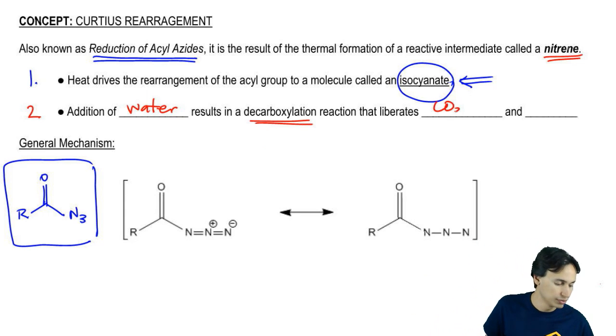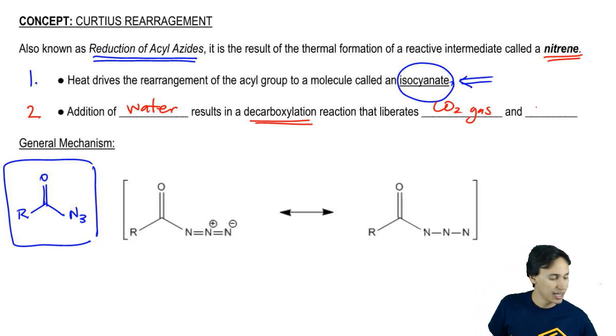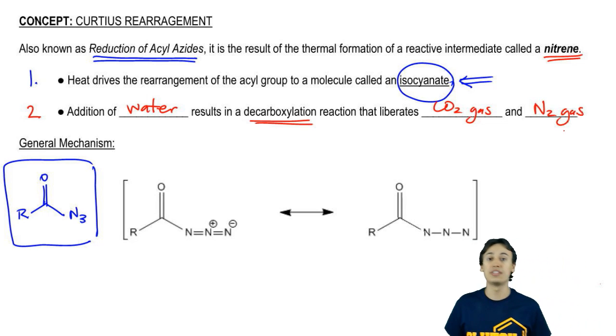It's going to liberate two gases at the end: CO2 gas because decarboxylation reactions always liberate CO2 gas, and we're also going to liberate N2 gas from the decomposition of the acyl azide in the first step.